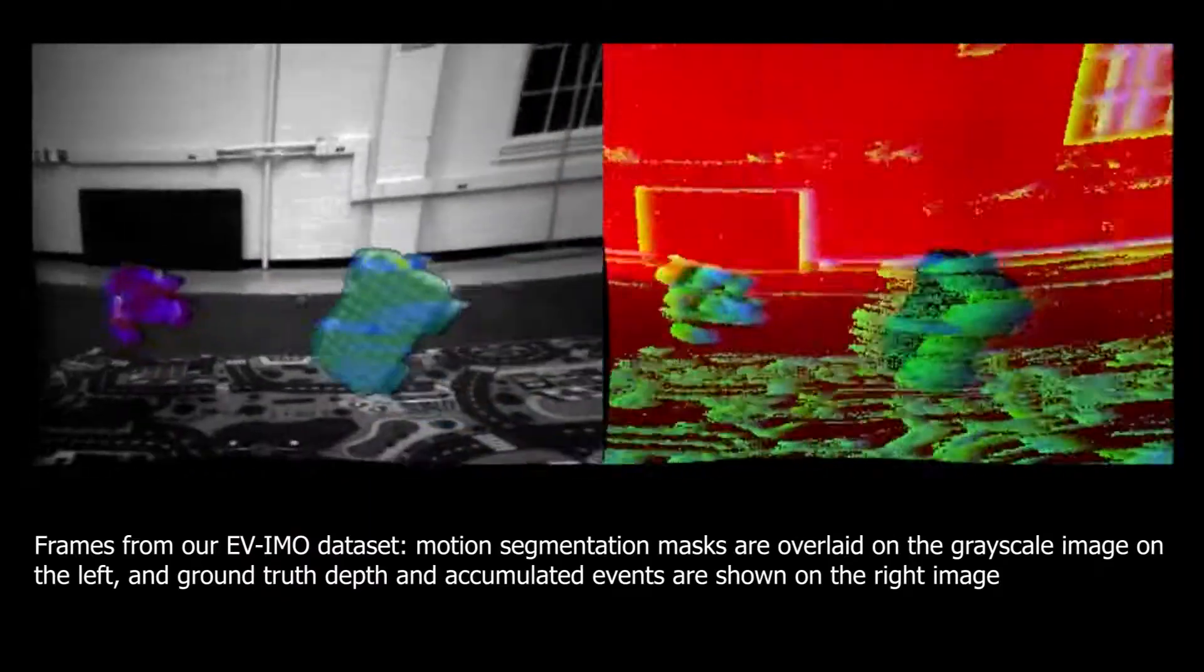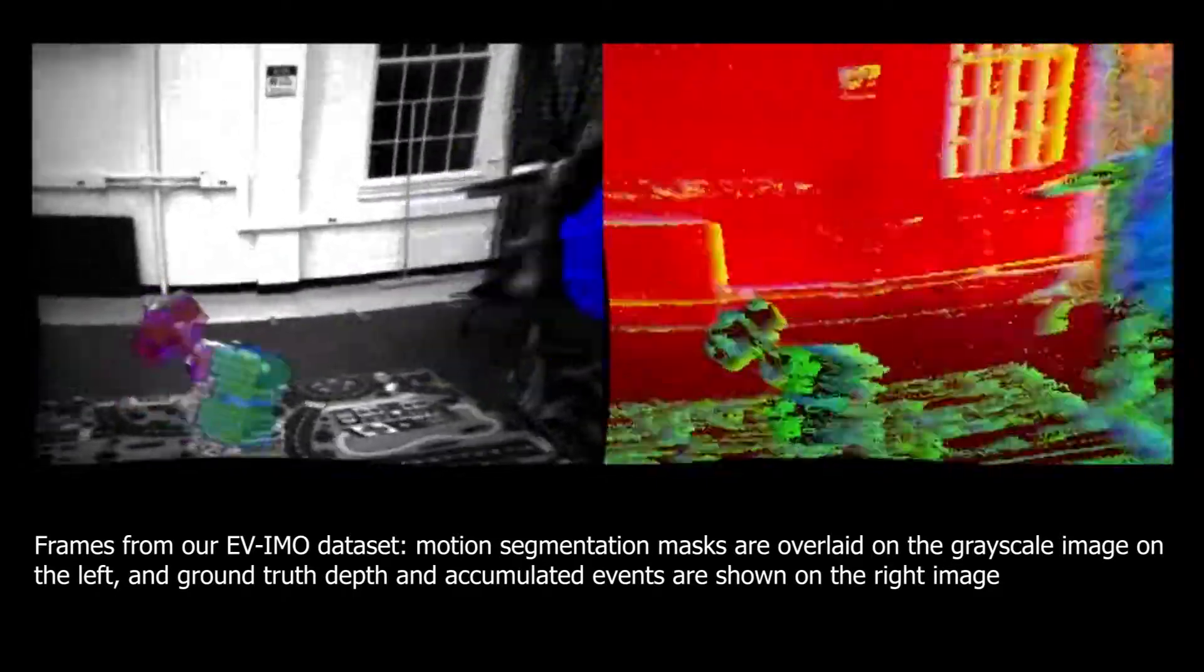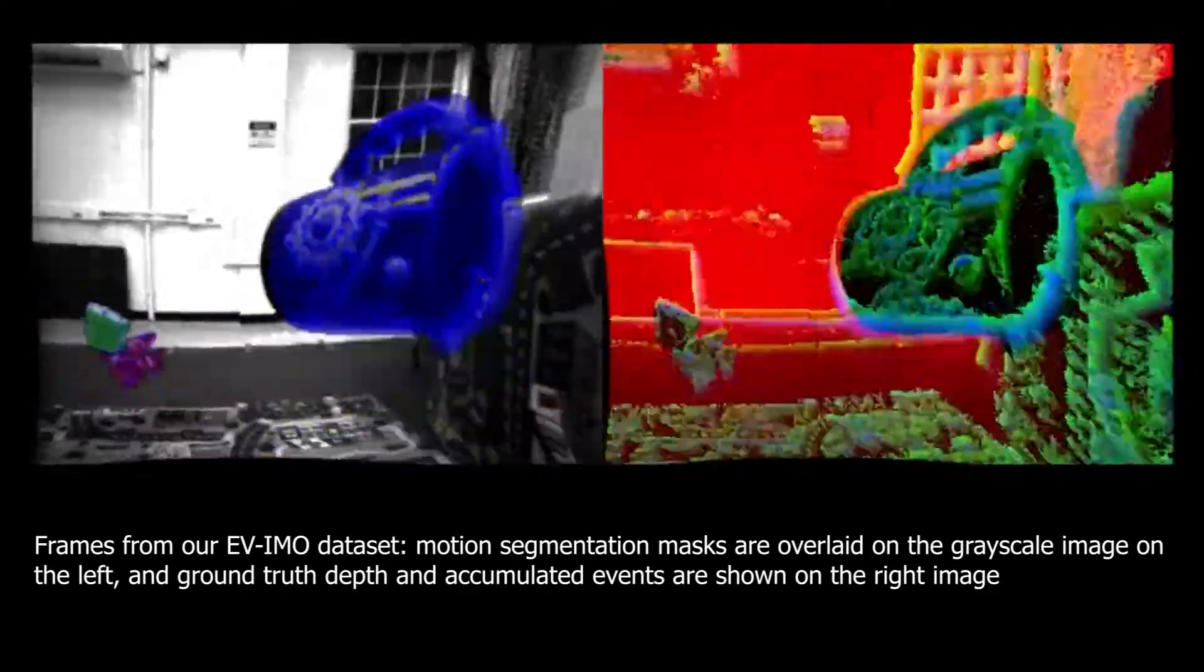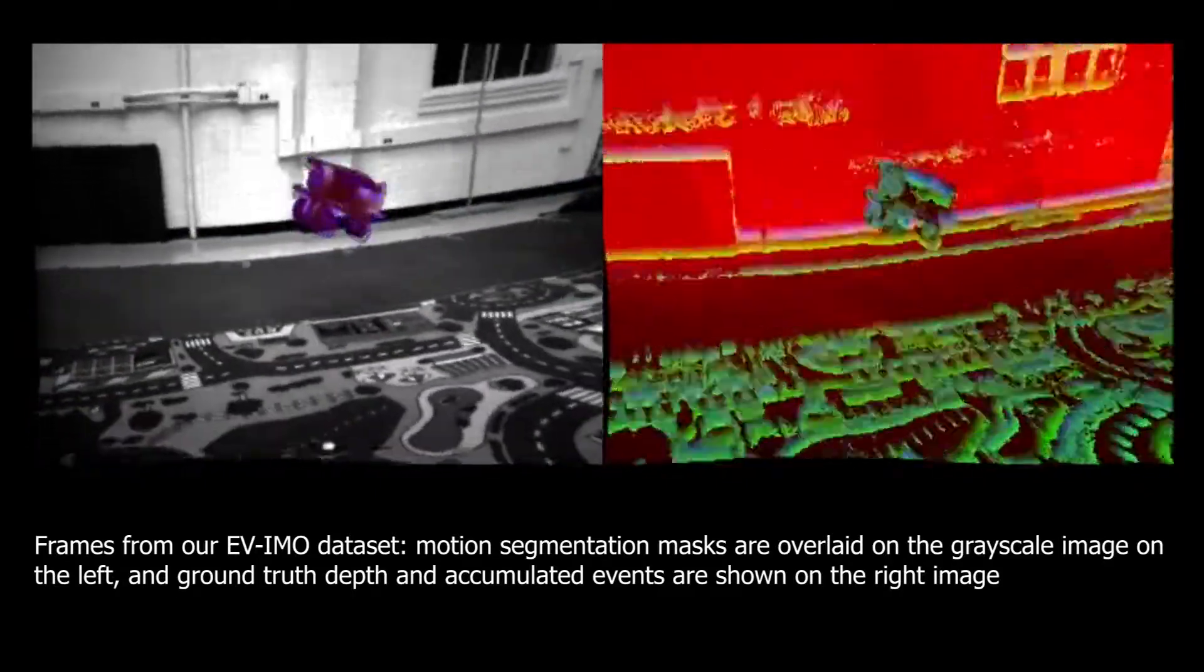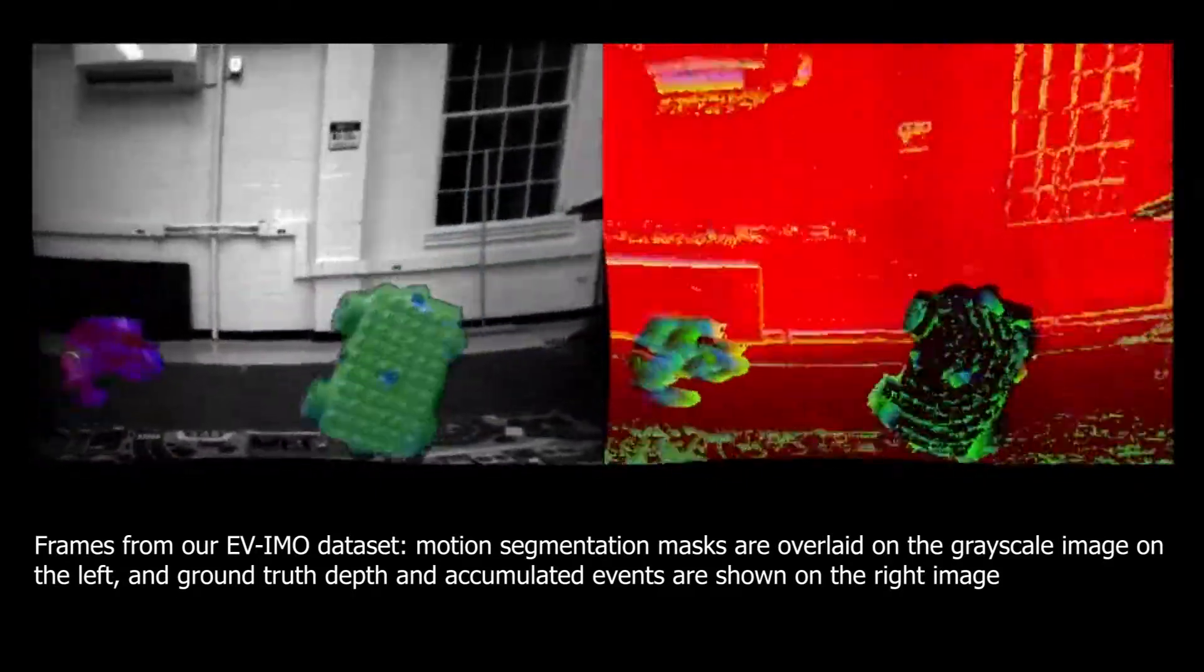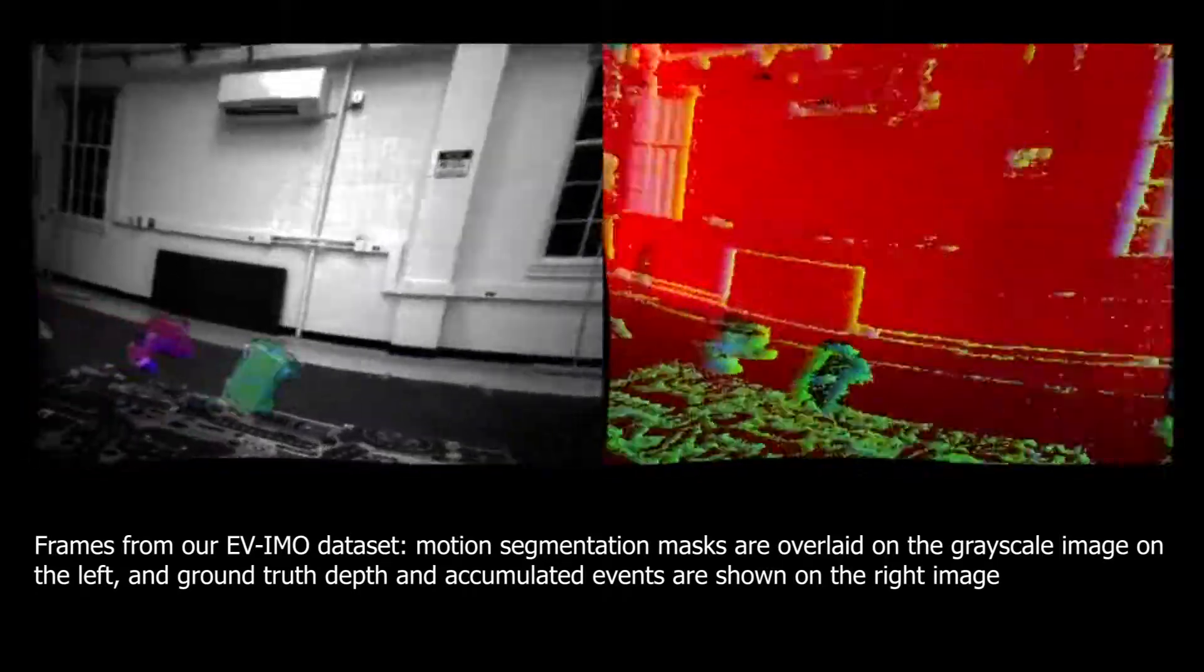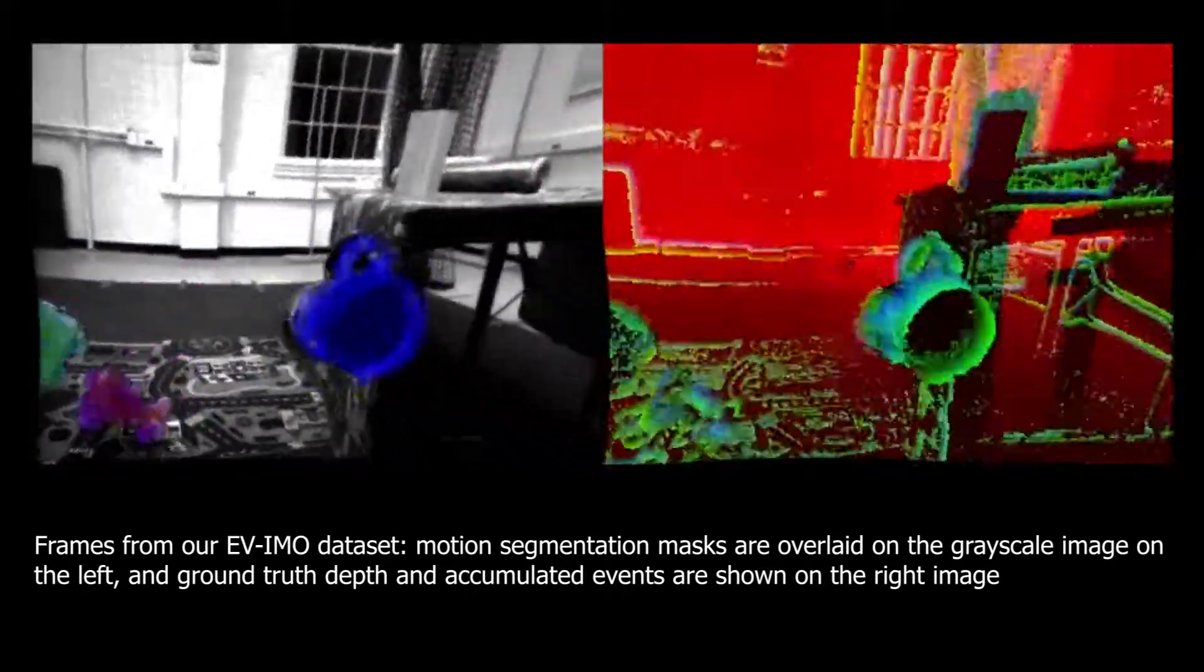Autonomous robots need not only to compute their own motion, but also detect and estimate the motion of objects. We present a neural network approach to this problem using event data as input, along with the first dataset with ground truth of scene depth and all rigid motions.